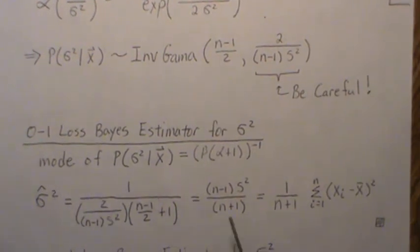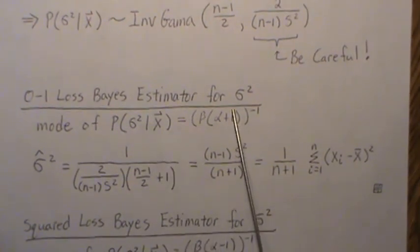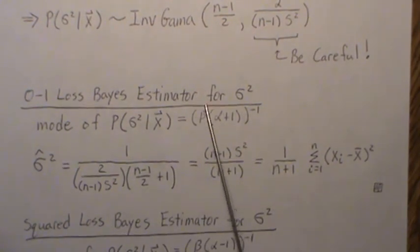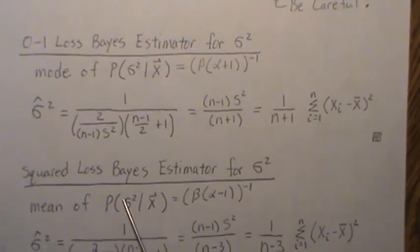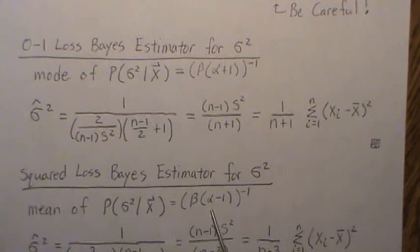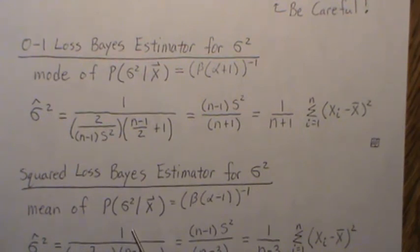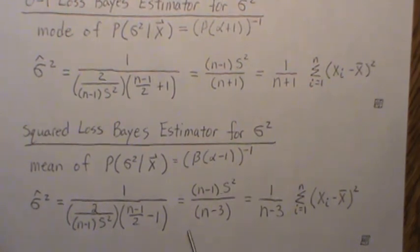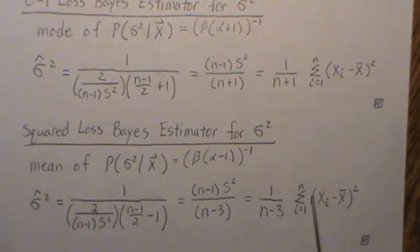That is the Bayes estimator for sigma squared under zero-one loss. I have a video called 'The Mode of an Inverse Gamma Distribution' if you want to see the calculation for that. Under squared loss, the Bayes estimator for sigma squared is the mean of the posterior distribution, which equals beta times (alpha minus 1) raised to the minus one. I also have a video called 'Mean and Variance of an Inverse Gamma Distribution' for that derivation. Plugging in beta and alpha and simplifying, the minus-ones cancel and we obtain the Bayes estimator under squared loss.